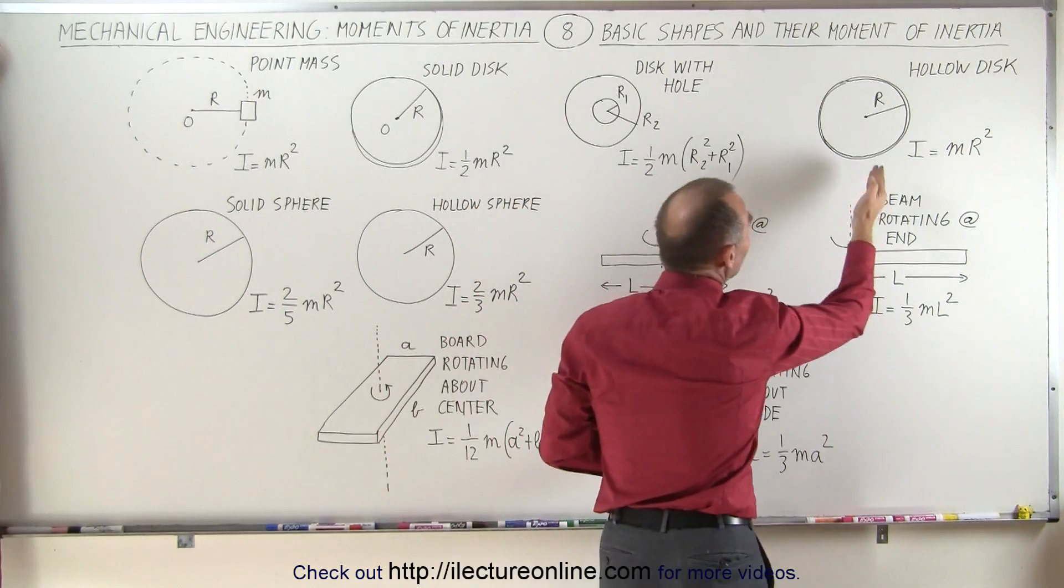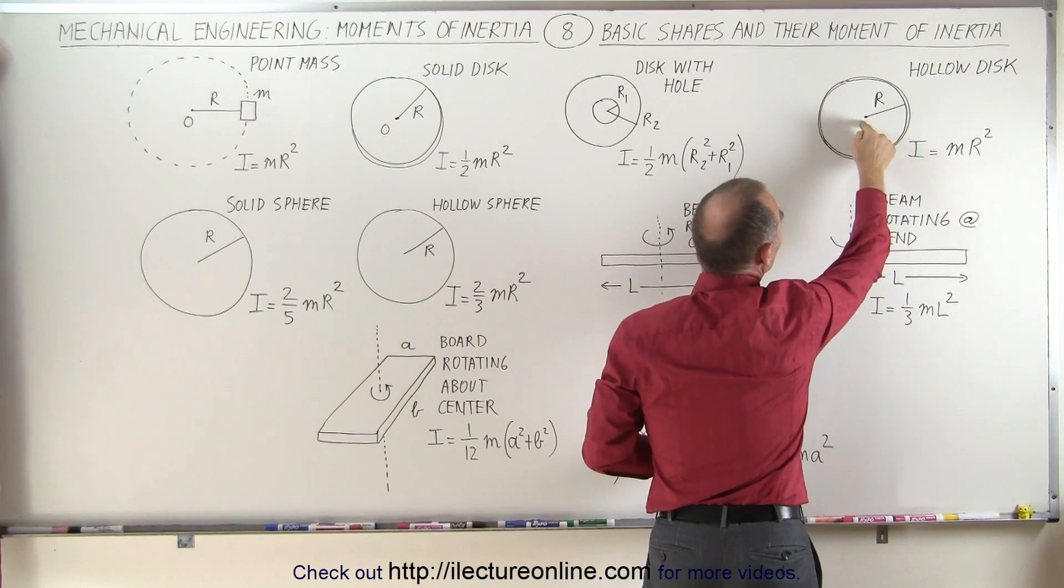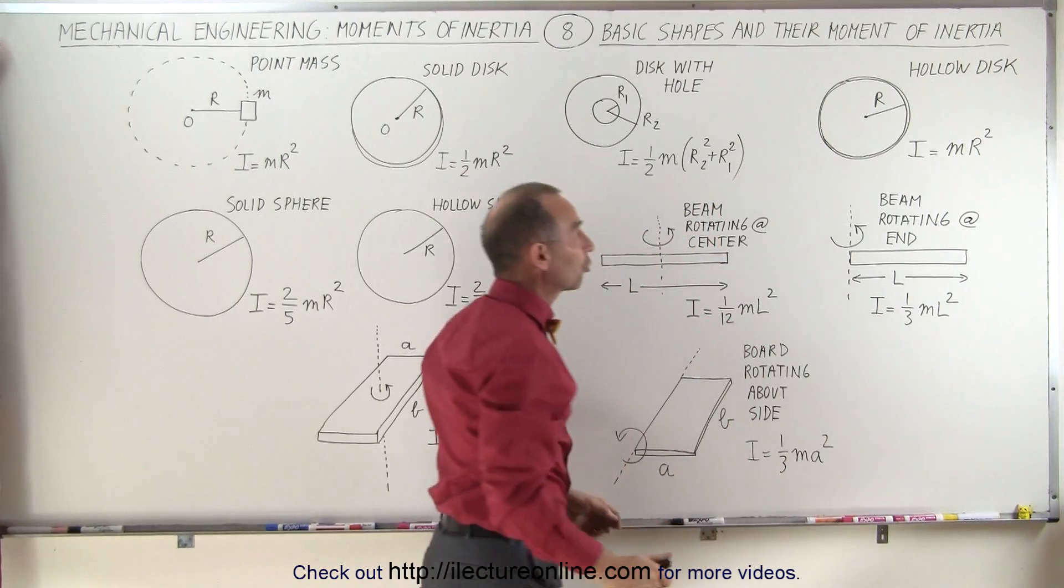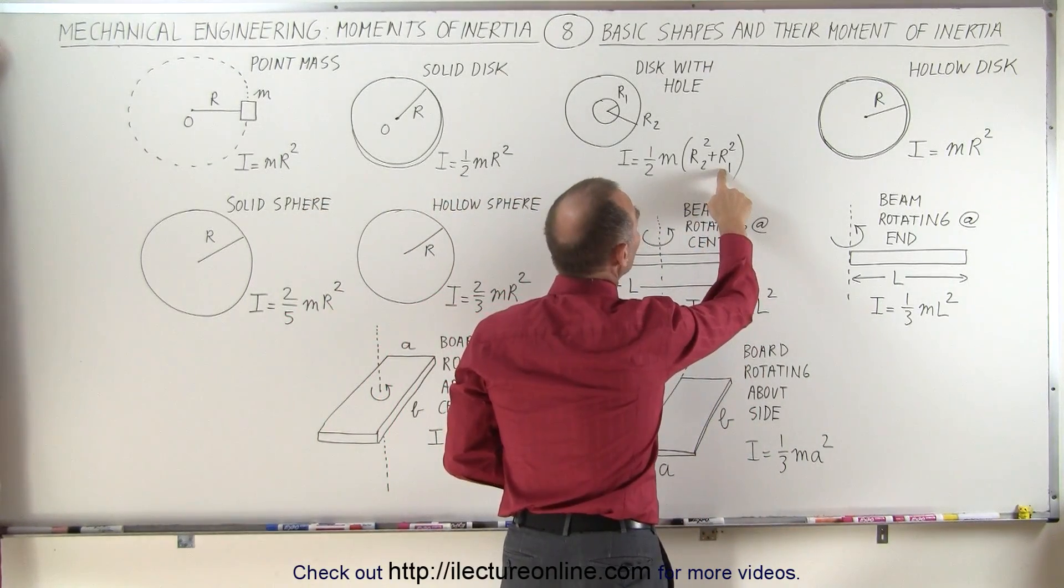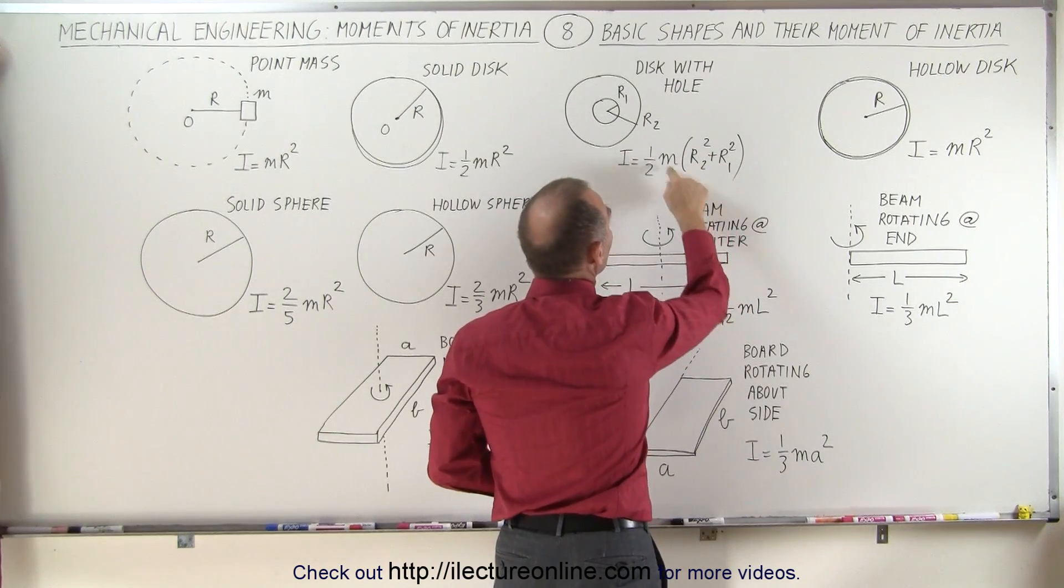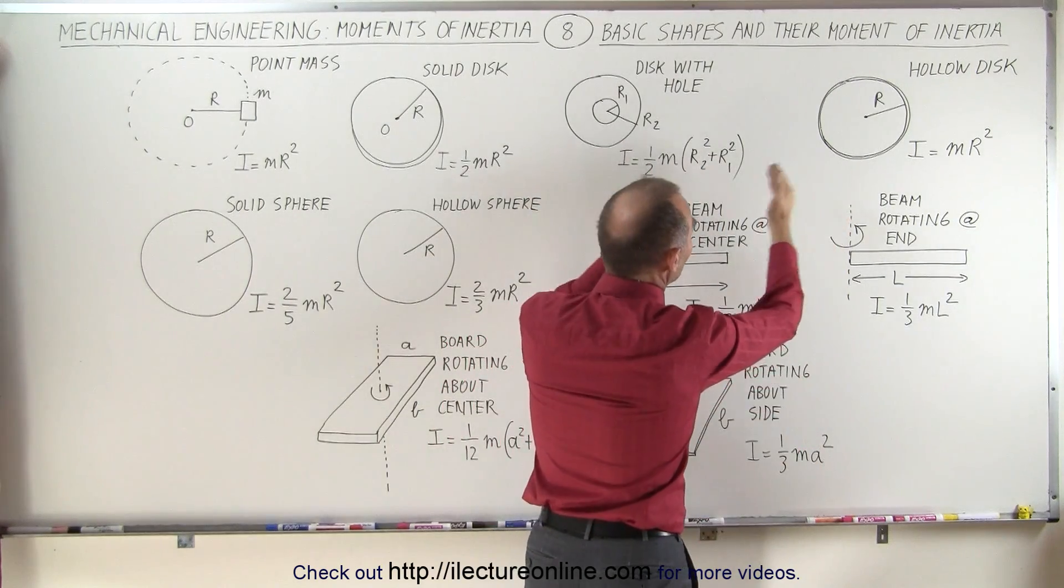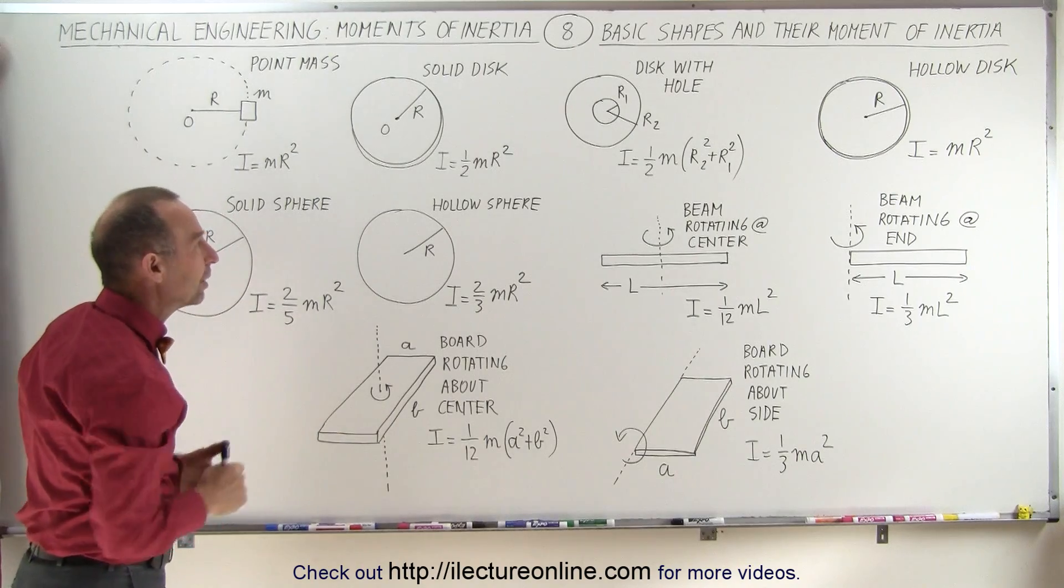If it's a hollow disk, all the mass is at distance R from the point of rotation, so you get I equals mR squared. Notice that if R1 becomes equal to R2, you have twice R2 squared, the two will cancel and you end up with mR squared again. The two equations coincide, or at least one is derived from the other.